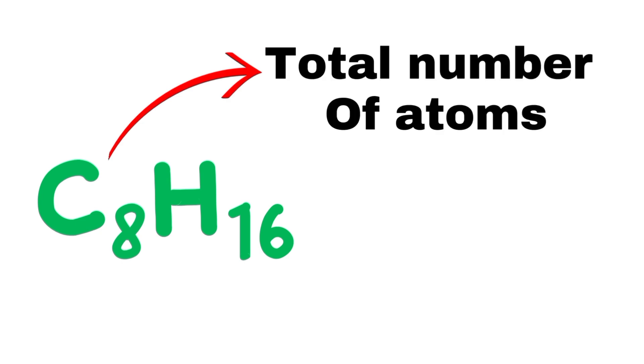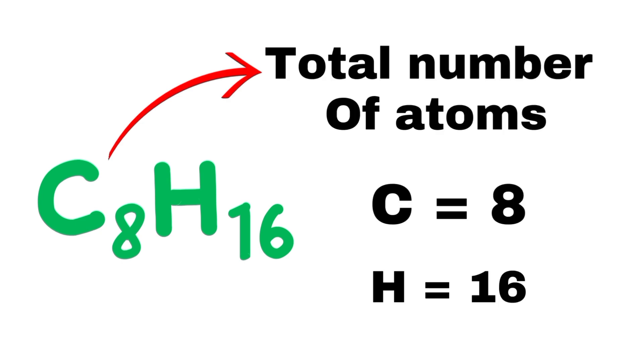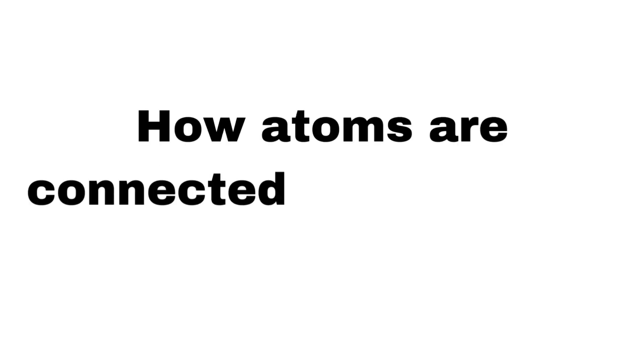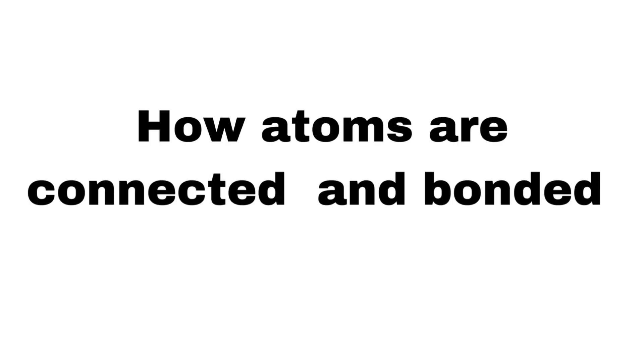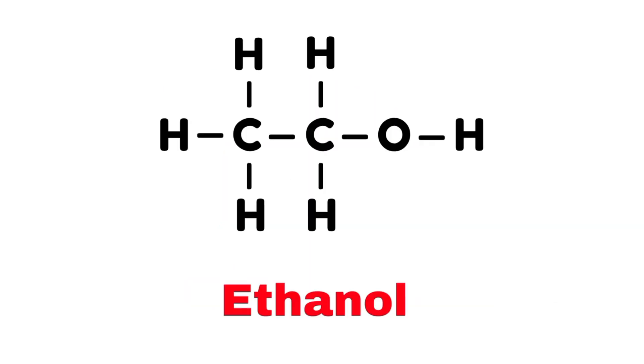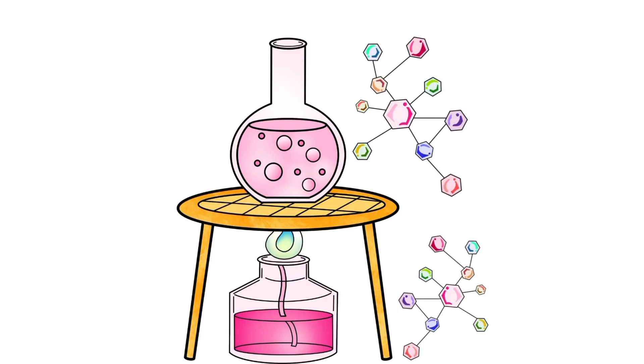Regarding structure and bonding: the molecular formula represents the actual number of atoms of each element in a molecule, but does not provide any information about the arrangement of these atoms. For ethanol, the molecular formula is C2H6O. The structural formula provides more detail by showing how the atoms are connected or bonded to each other, representing the molecular structure using symbols for atoms and lines for bonds. For example, the structural formula of ethyl alcohol can be written out explicitly.